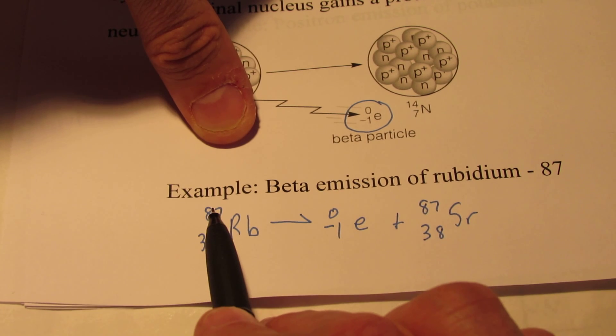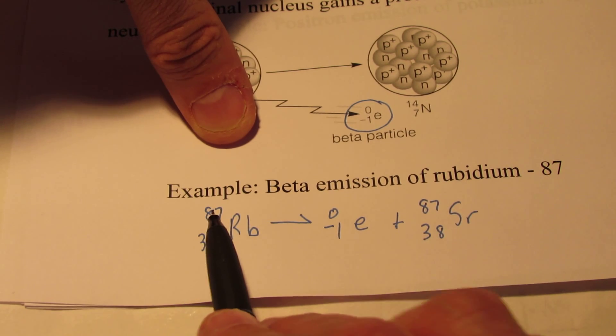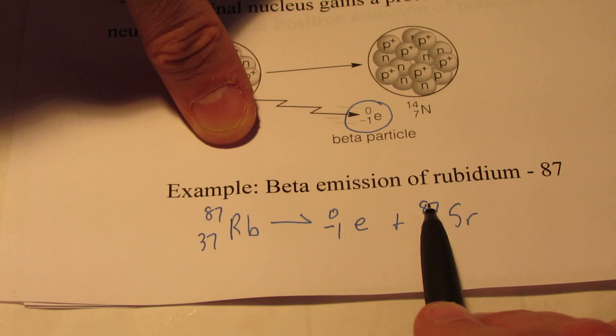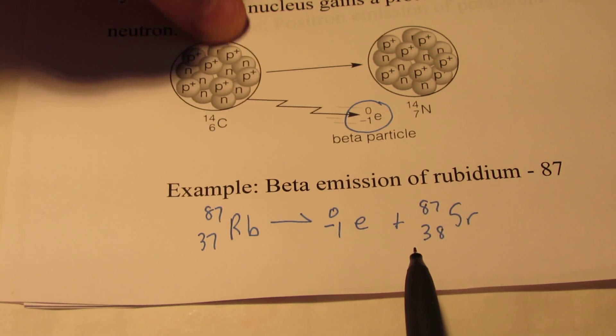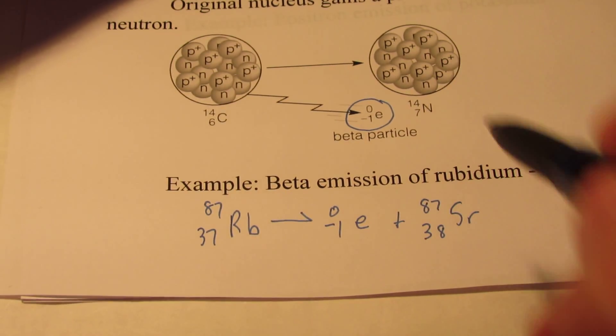An easy way to check your work is just make sure the bottom numbers on each side of your nuclear equation balance. So does 37 on the left side equal negative 1 plus 38? It does. Does 87 for a mass number on the left side equal 0 plus 87 on the right? And obviously it does. Now you'll have some of these to do on your homework tonight.